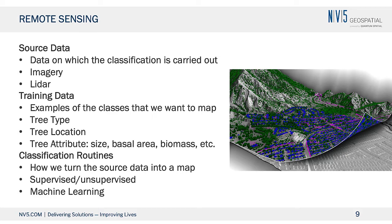What we're doing is not eliminating the need for field work — field work is really important. But what we're able to do with remote sensing is extrapolate from that field work to a much larger area, something we'd never be able to do if we were just boots on the ground. The quality of the source data and the training data are what makes the quality of the classification.